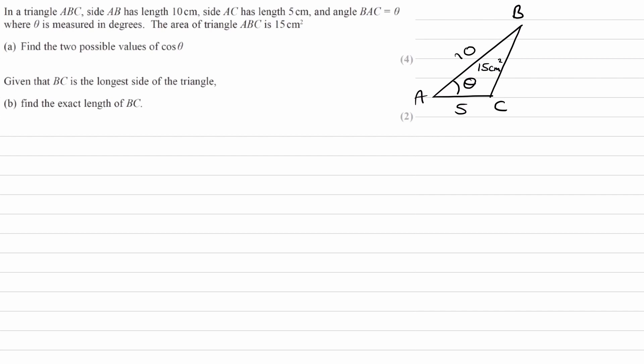Area of a triangle is half AB sine C. When you're using this equation, you have to consider two sides and the angle between them. So we have two sides, 10 and 5, with the angle between them theta. If we put in those things, a half times 10 times 5 multiplied by sine theta equals the area of the triangle, 15.